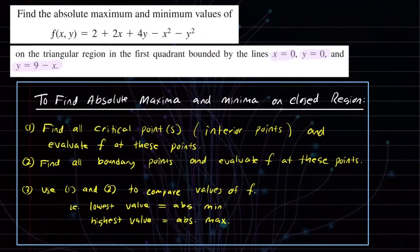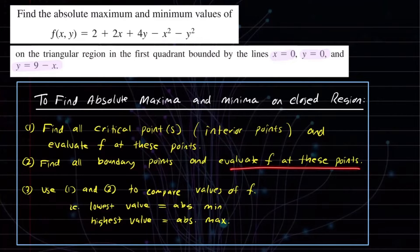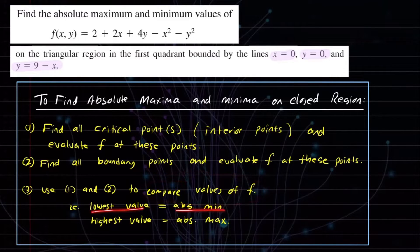For this problem, we're first going to find the critical points. Once we find the critical points that are in the region, we evaluate the function at those points and hold on to that value. Then we find all the boundary points of the region, evaluate f at those points, and check for any critical points on the boundary. Finally, we compare all function values — the lowest is our absolute minimum and the highest is our absolute maximum.